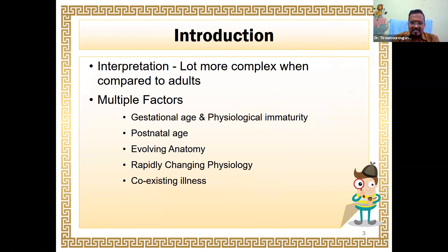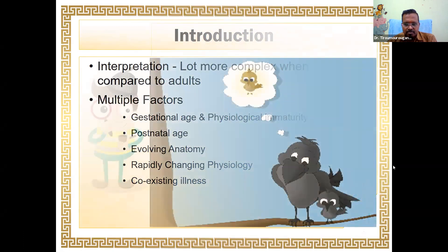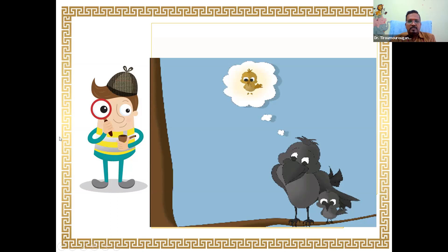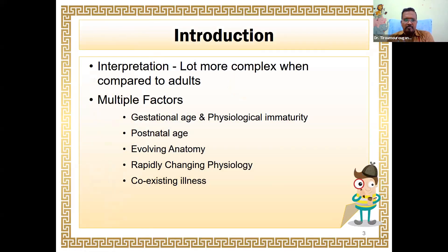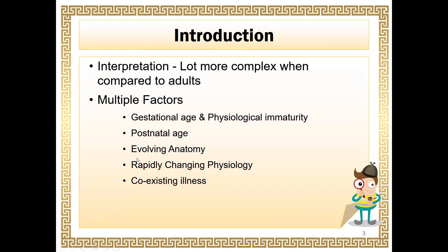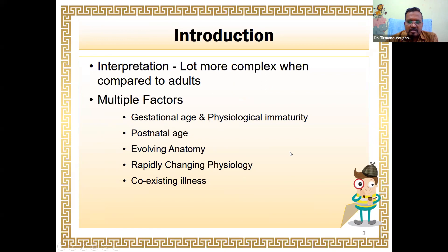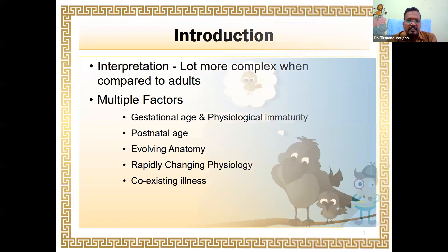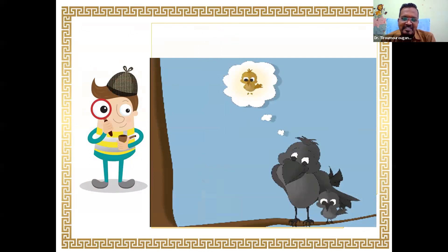One of the problems with newborns is that we all know they are no longer miniature adults, so interpretation of tests is very different when compared to adults. The reasons are many: first, we have gestation-related physiological immaturity. After the baby is born, there are a lot of physiological and anatomical changes which keep happening, and on top of it, many co-existing illnesses — all this put together makes interpretation of newborn tests very difficult.